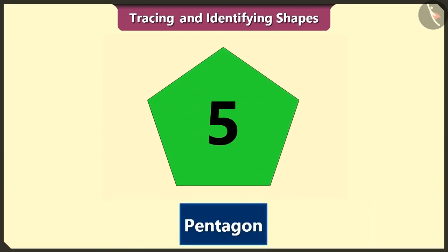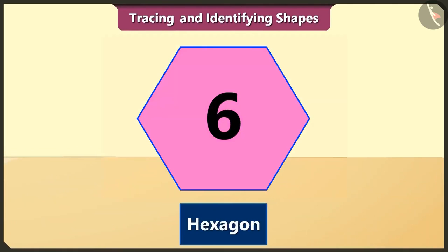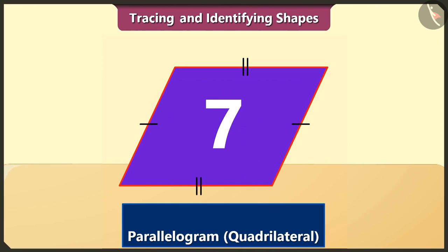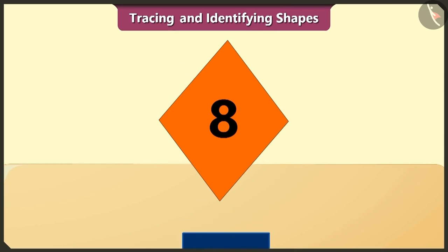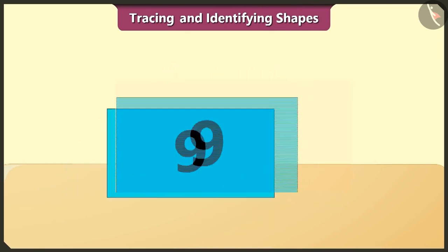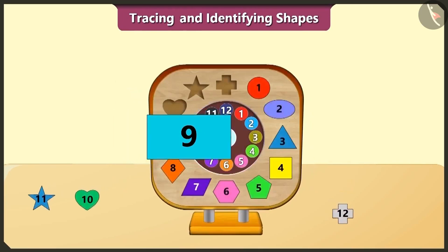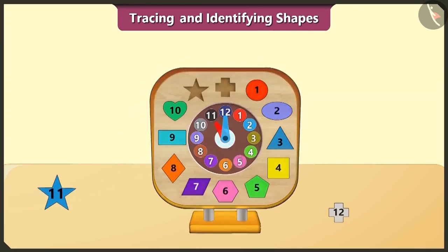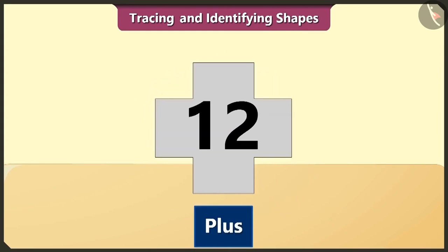The five-sided pentagon is fifth in order. The six-sided hexagon is sixth in order. The four-sided quadrilateral is seventh in order. The four-sided rhombus is eighth in order. The rectangle is ninth in order; its opposite sides have the same length. The heart is tenth in order. The star is eleventh in order. And the plus symbol is twelfth in order.